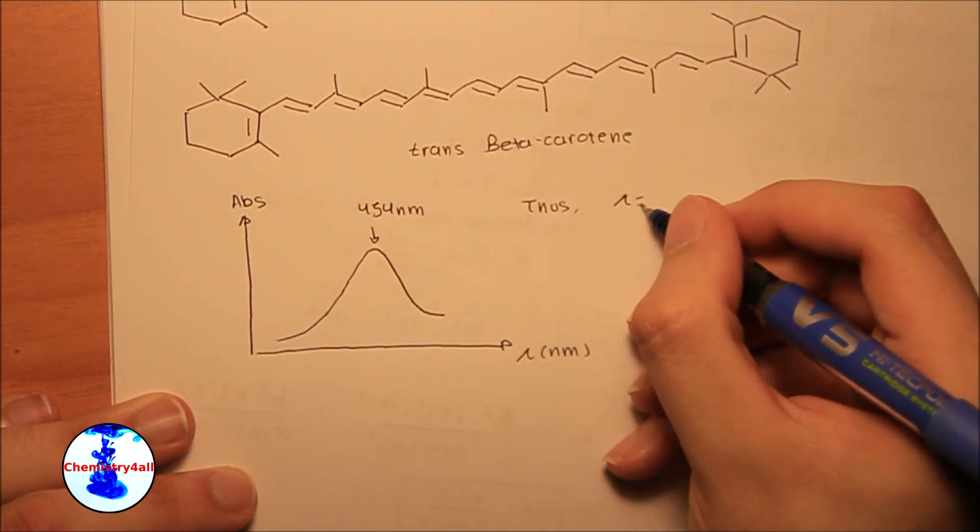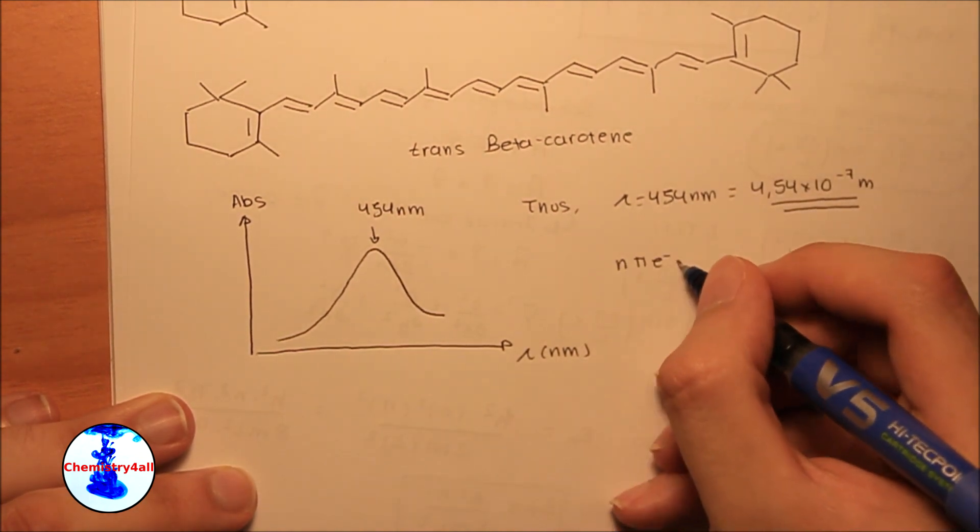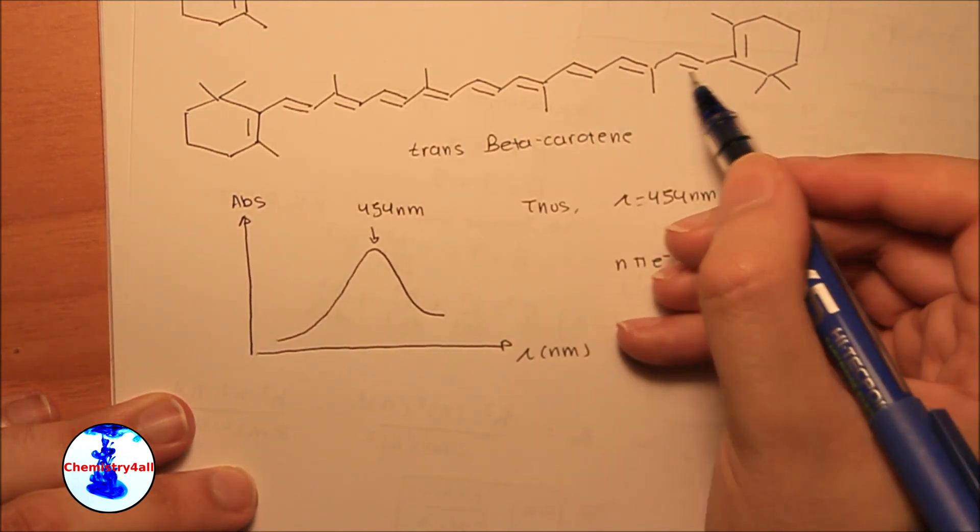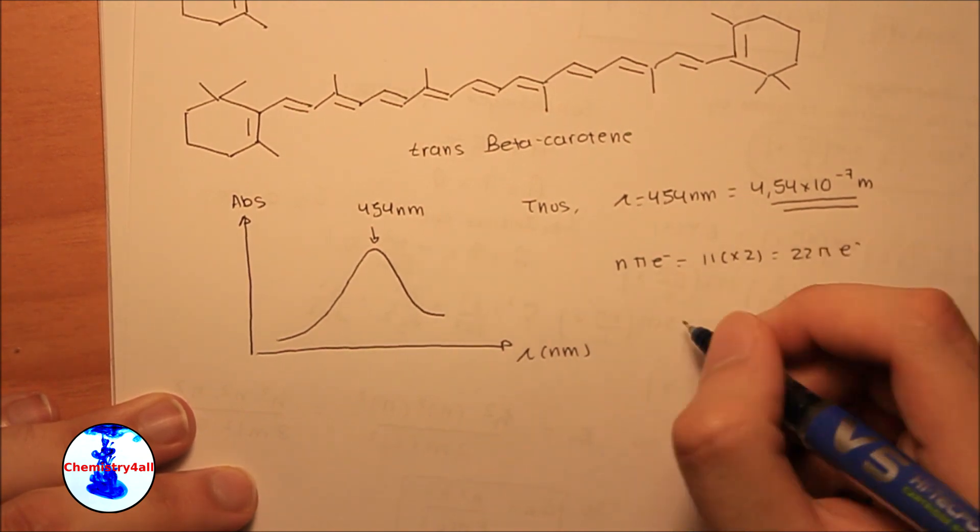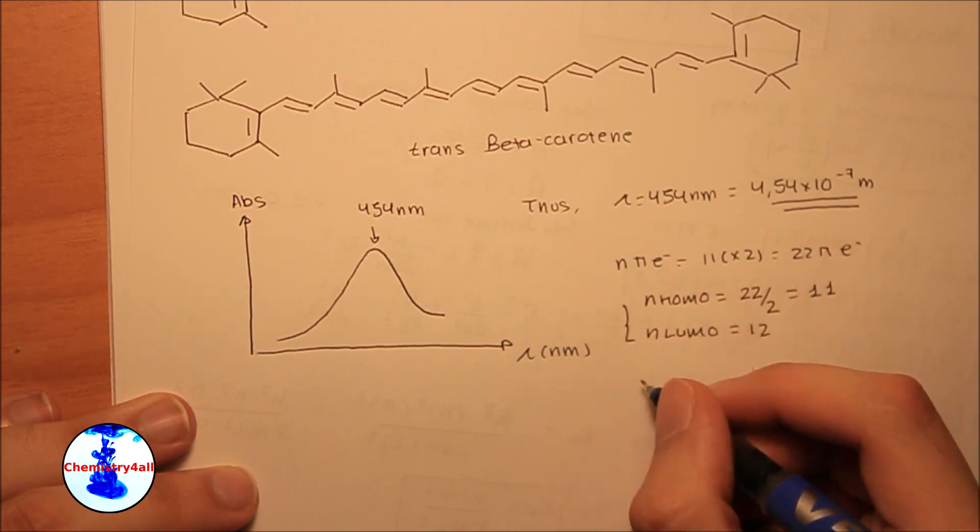Using the experimental data obtained before, which showed a maximum absorption band centered at 454 nanometers, and the previously obtained formula, we can get the length of the conjugated system.